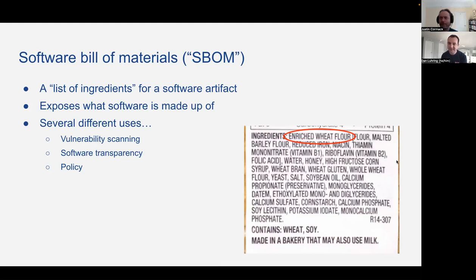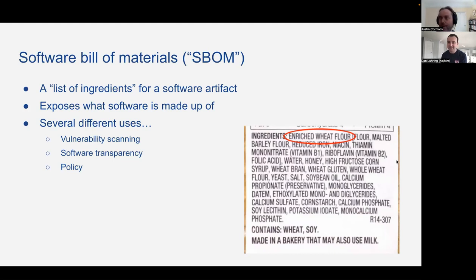If you're allergic to peanuts, you appreciate it when there's a list of ingredients on everything. And that's why there are lists of ingredients on things. You wouldn't like to go into a situation where there wasn't a list of ingredients — it's exactly the same kind of thing. If you don't want to run certain kinds of software because they've got serious bugs or security vulnerabilities, it's much easier if you've got a list of the software that's in there, so you can take a look and see if it's something you really don't want to be consuming.